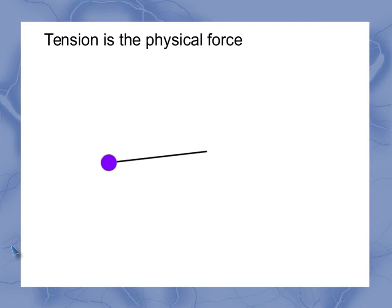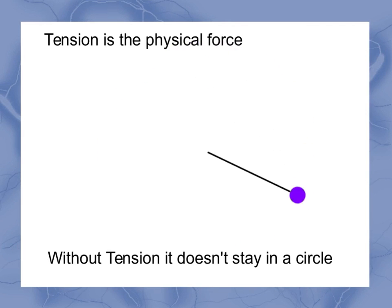So here's an example of a mass swinging around in a circle on a string. Tension is the physical force. Without tension, it doesn't stay in a circle. So as we're going around here, what we see is that if I don't have tension, I don't have circular motion. The amount of tension I need is given by how much centripetal force is needed, and that depends on the mass, how fast I'm trying to make it swing around, and what the radius of the circle is.